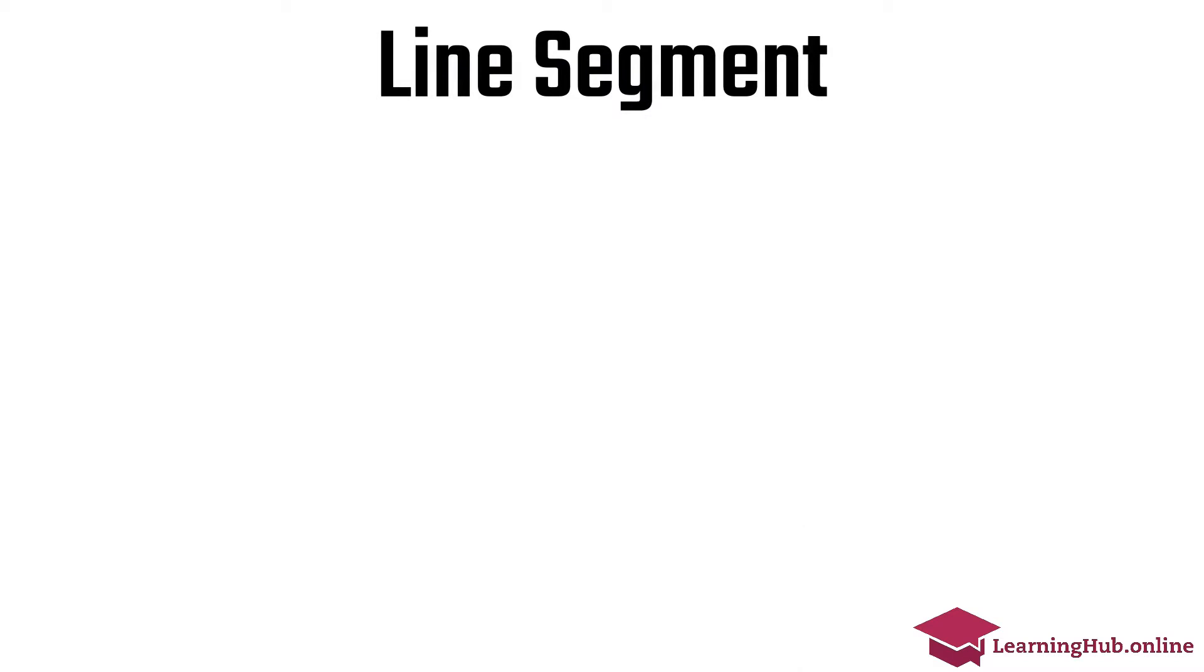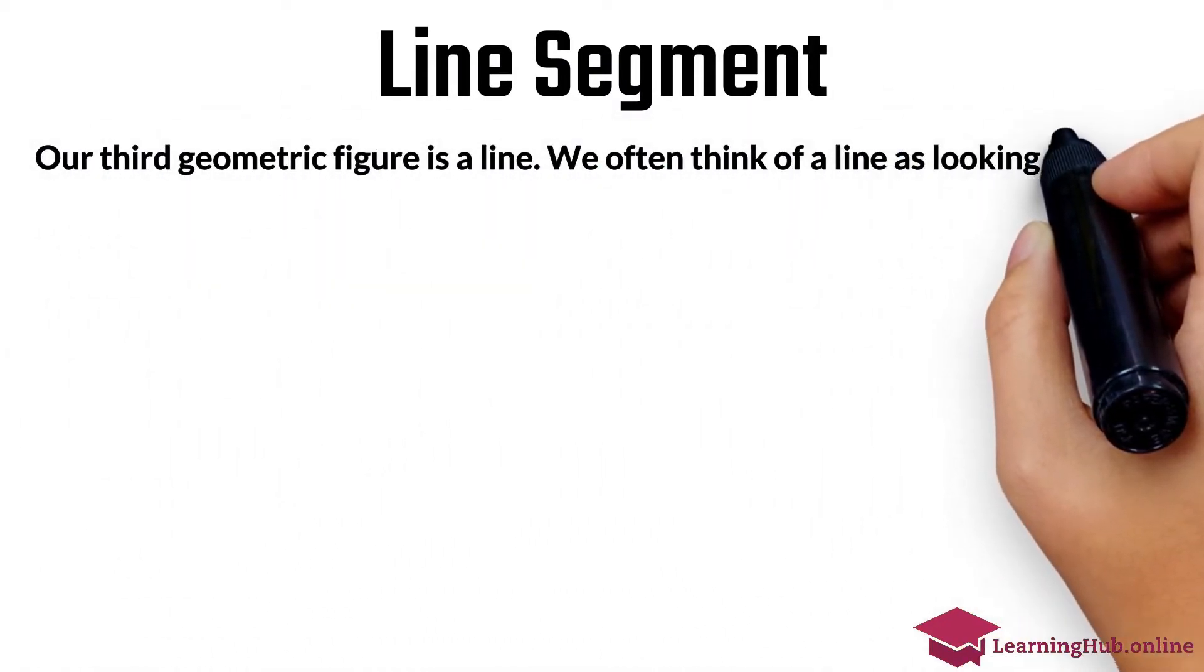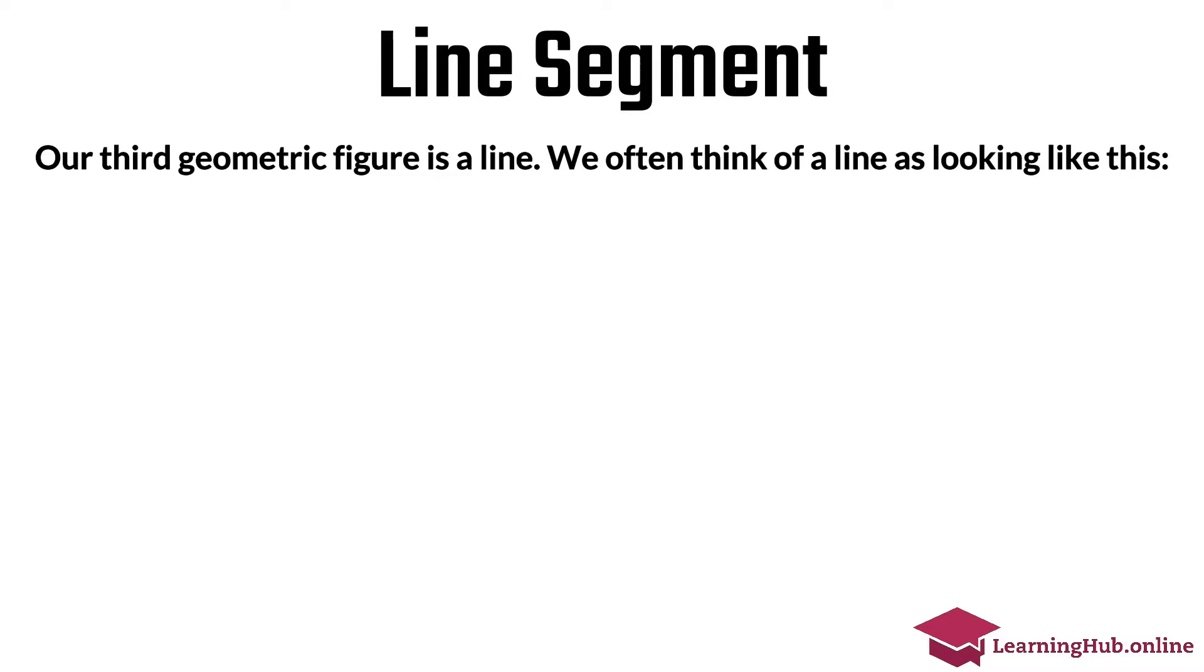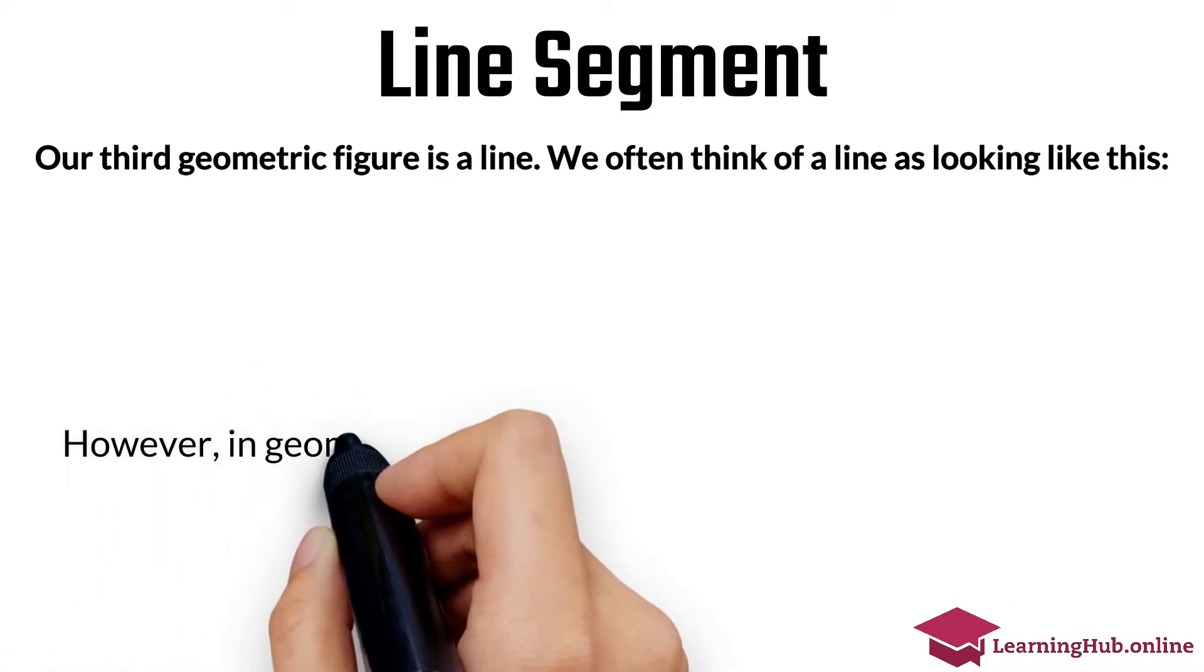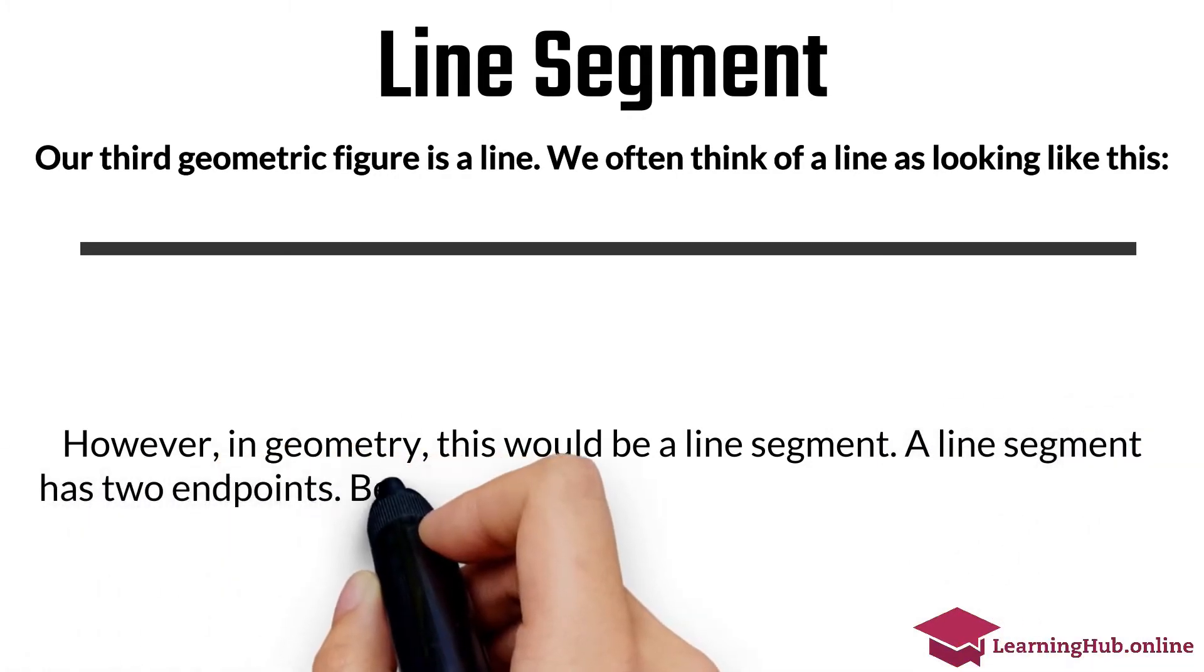Line segment. Our third geometric figure is a line. We often think of a line as looking like this. However, in geometry, this would be a line segment. A line segment has two endpoints.